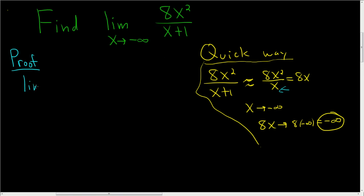We'll have the limit as x approaches negative infinity of 8x squared. And we're going to divide this by x over and then x plus 1. And we'll divide this by x, right? We can do that, right?